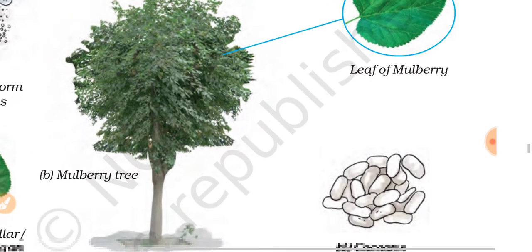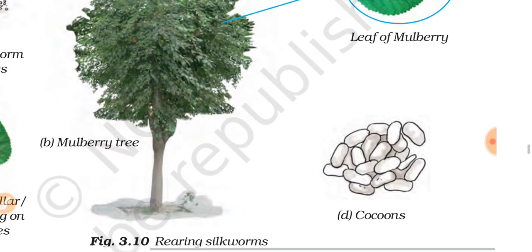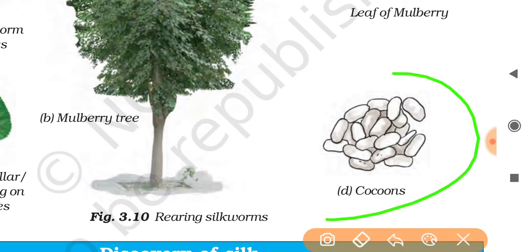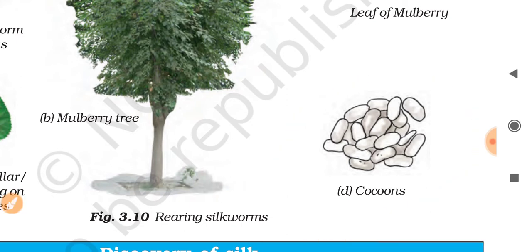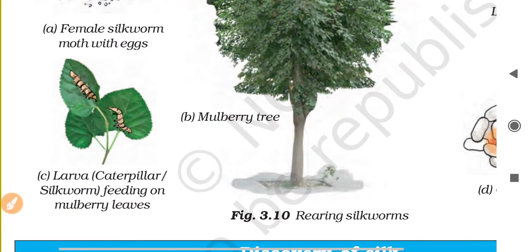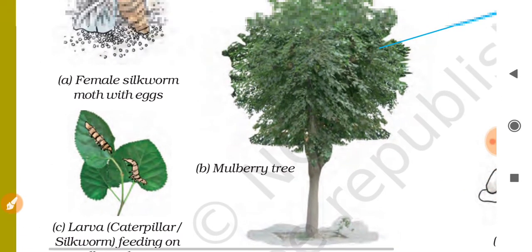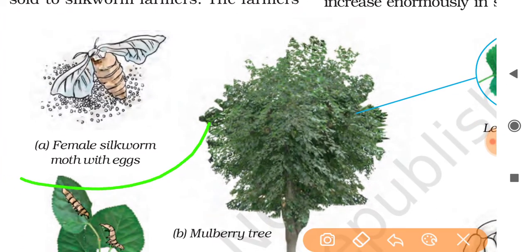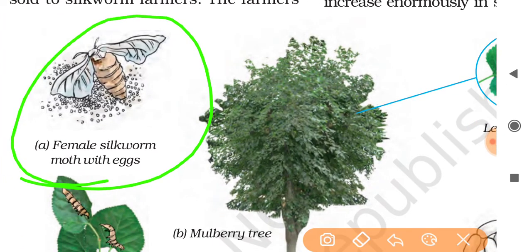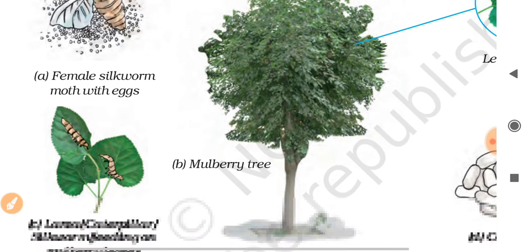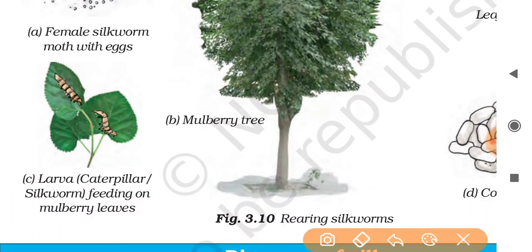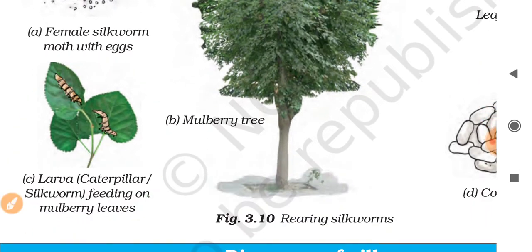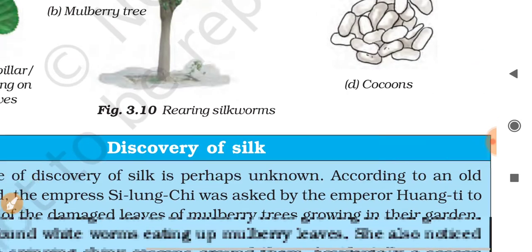This is done when mulberry trees bear a fresh crop of leaves. The larvae, called caterpillars or silkworms, eat day and night and increase enormously in size. You can see the mulberry tree, its leaf, and the cocoons found on mulberry plants. First a female silkworm lays eggs, then it increases in size by eating the leaves, and finally a cocoon is formed.